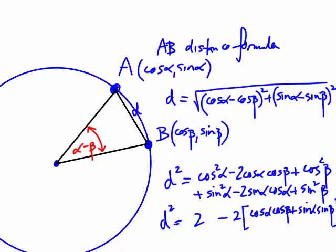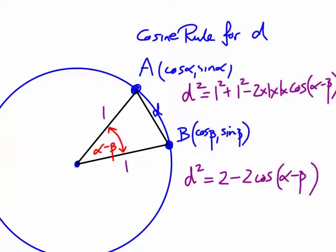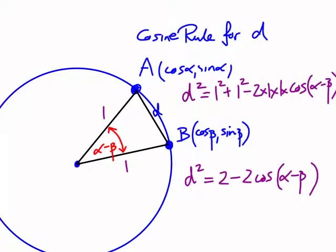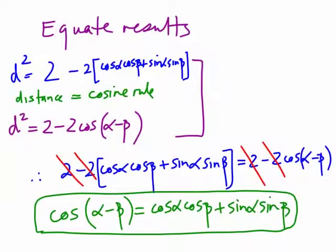We then find the same distance using the cosine rule: a² = b² + c² − 2bc·cos(A), where the angle is (α − β). This gives us another expression for d². Equating the two d² expressions from the distance formula and the cosine rule, we arrive at the seedling result: cos(α − β) = cos α cos β + sin α sin β.